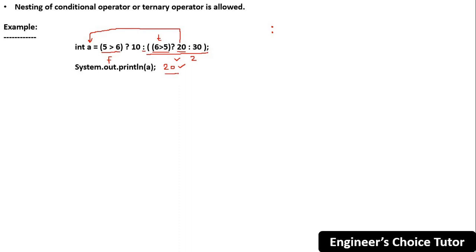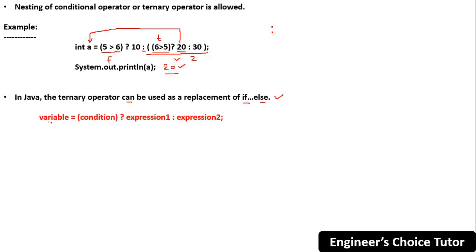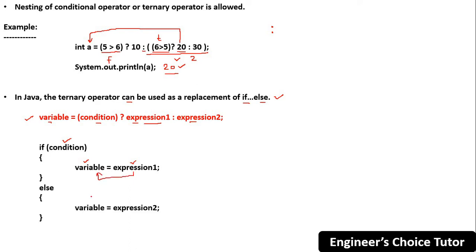In Java the ternary operator can be used as a replacement for if-else. With the ternary operator: `result = condition ? expression1 : expression2`. The equivalent if-else is: if the condition is true, `variable = expression1`; otherwise `variable = expression2`. So the ternary operator is a shorthand or shortcut for the if-else construct.